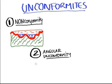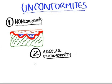The second unconformity is angular unconformity. And that one occurs when we have two different sequences of sedimentary rocks. In this case, the first sequence of sedimentary rocks